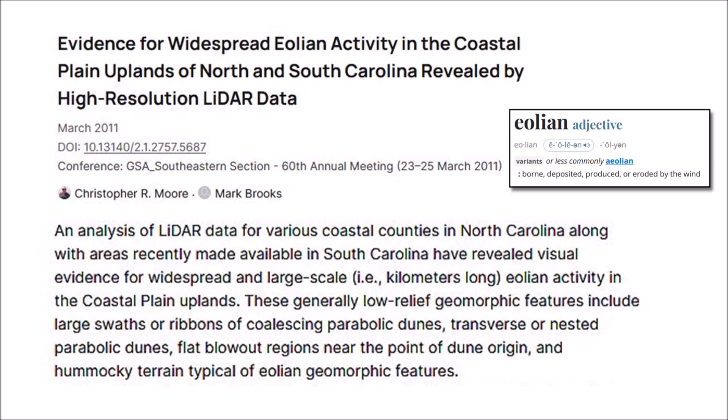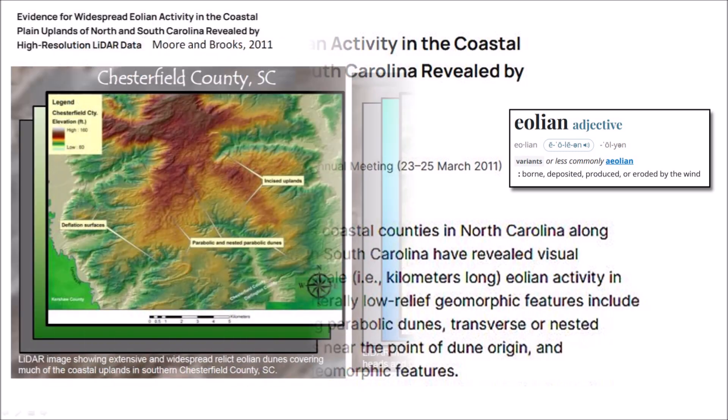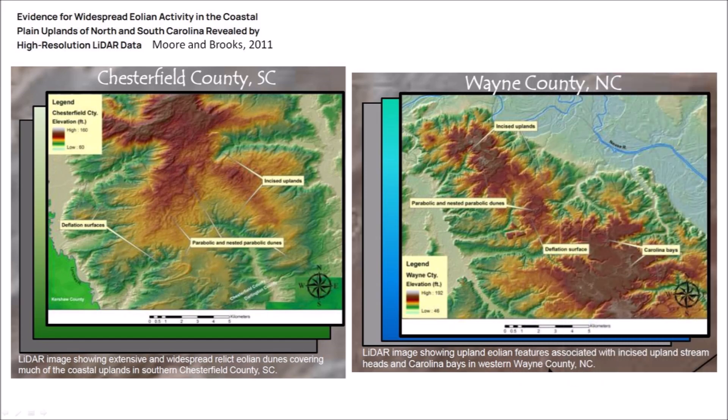These generally low-relief geomorphic features include large swaths or ribbons of coalescing parabolic dunes, transverse or nested parabolic dunes, flat blowout regions near the point of dune origin, and hummocky terrain typical of eolian geomorphic features. Although dune topography in the coastal plain has been recognized and mapped prior to the development of LiDAR, these deposits appear to represent an under-recognized or at least under-appreciated geomorphic feature within many areas of the coastal plain of North and South Carolina. Eolian features appear associated with dominant westerly winds within flat upland regions of the coastal plain and often originate from incised upland terraces and incised headwater regions of small upland feeder streams.